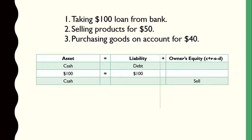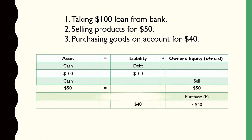The second transaction is selling products for $50. If you sell something, you receive cash, which is a short-term asset. So on the asset side, cash increases by plus $50. And selling something increases your revenue, so on the owner's equity side, you add $50. There is plus $50 on the asset side and plus $50 on the owner's equity side.